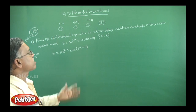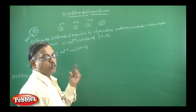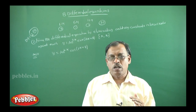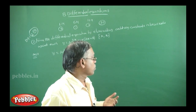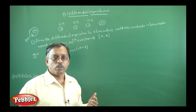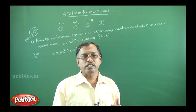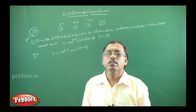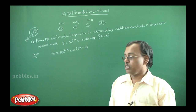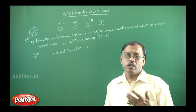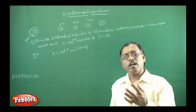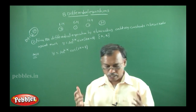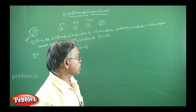In the 6-mark model, the first type is: they will give an equation and you have to frame the differential equation by eliminating the arbitrary constants. After this, you will see first order differential equations — there are three types: variable separable method, homogeneous differential equations, and first order linear differential equation in y and x. First, we will see how to form the differential equation by eliminating the arbitrary constants.